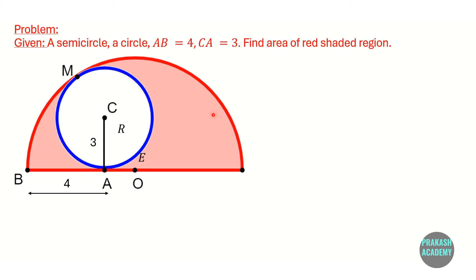Hello friends. In this problem a semicircle has been given and inside this semicircle we have a full circle. This full circle touches the diameter of the semicircle at point A — that is, this diameter is a tangent to this circle at point A.